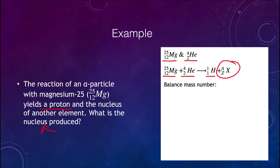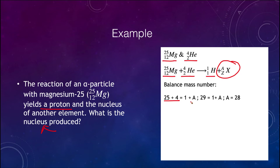The mass that goes in — 25 and 4 — has to equal the mass that comes out — 1 and A. So 25 plus 4 equals 1 plus A. That gives us 29 equals 1 plus A, and subtracting one from both sides, we find that A equals 28. So the mass number of the compound that comes out will be 28. That still doesn't identify the element, but it gives us the specific isotope.